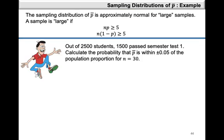Now let's take a look at this example. Out of 2,500 students, 1,500 passed semester test 1. Calculate the probability that P-bar, which is your sample proportion, is within plus or minus 0.05 of the population proportion P, for N equals 30. So our sample size is 30. The first step is to calculate our population proportion P, which is 1,500 divided by 2,500, giving us a value of 0.6.